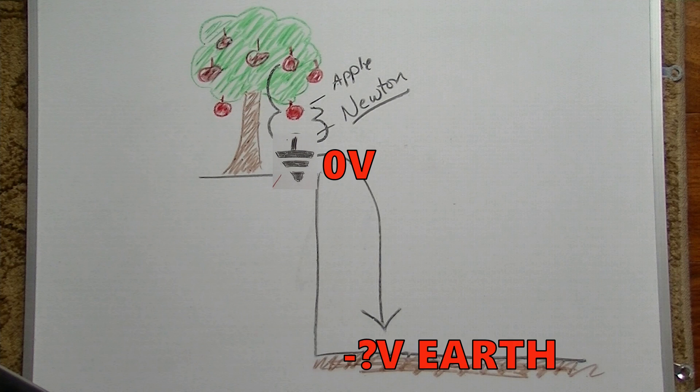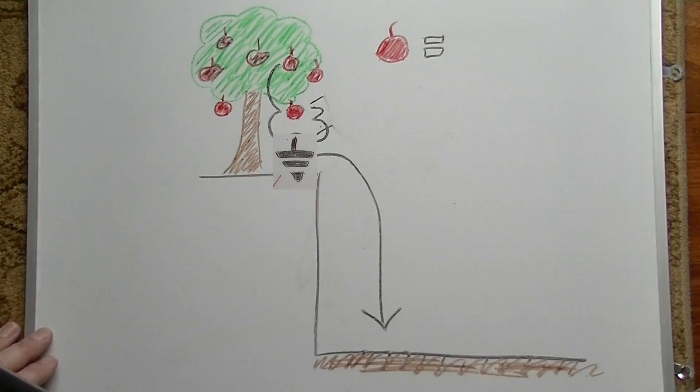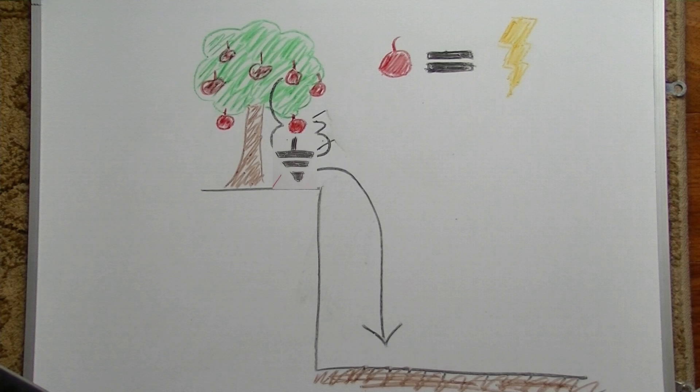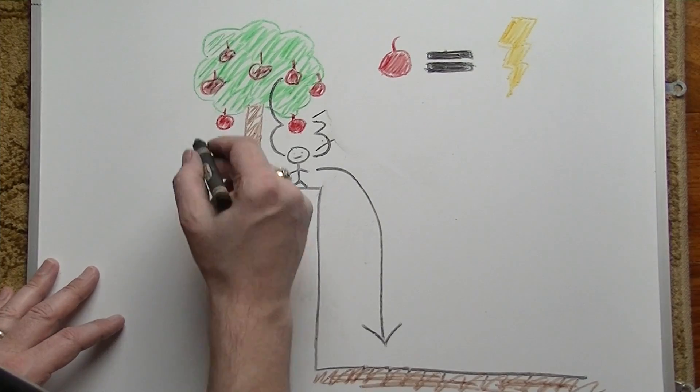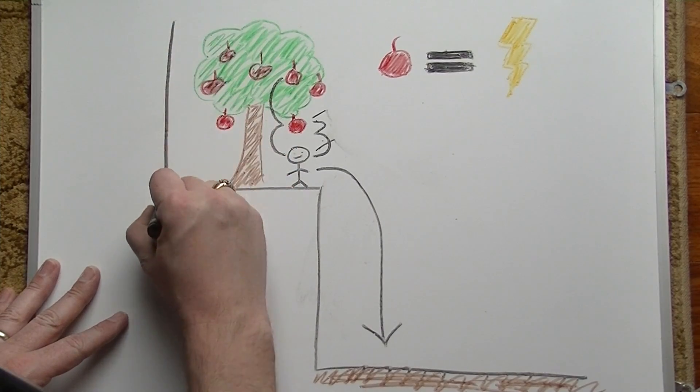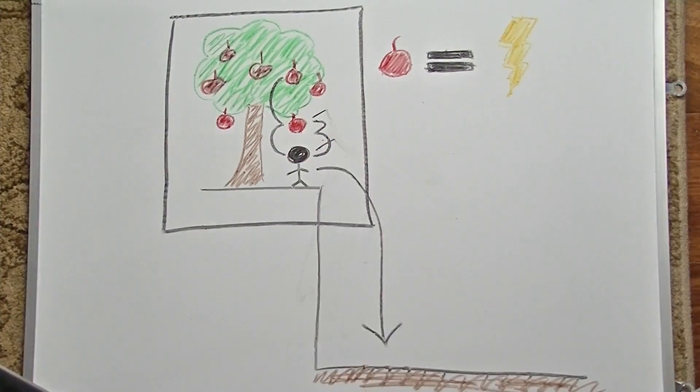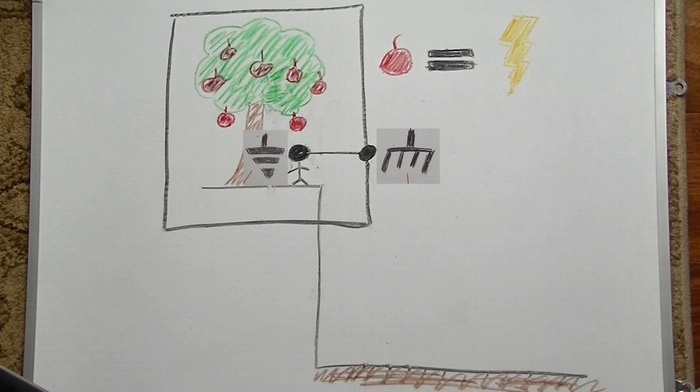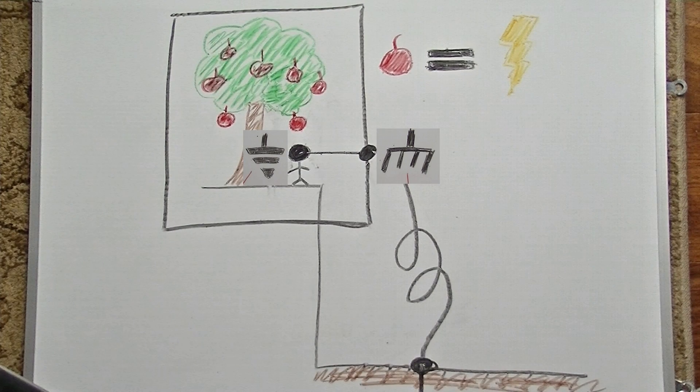The only reason we really care much about earth ground is for safety. If you imagine instead of apples falling there are bolts of lightning, you don't want to be the conduit connecting this lightning to earth. So instead, what we do with our circuits is surround them in a cage or box that is a conductor. Then we ideally make one solid connection from circuit ground to the box, also called chassis ground, and then we make one more solid connection between this box and actual earth ground.